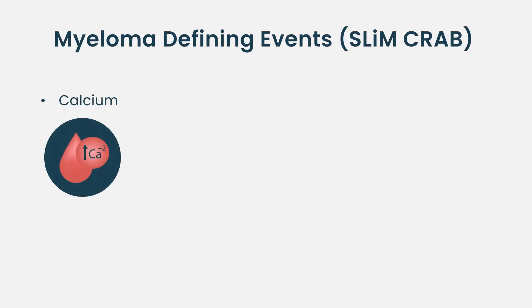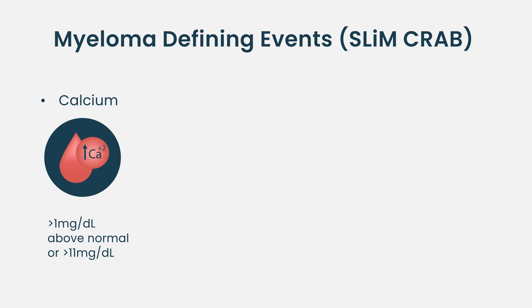CRAB is an acronym where C stood for high calcium, defined as greater than one milligram per deciliter above the upper limit of normal, or greater than 11 milligram per deciliter. So high calcium was the first criterion.